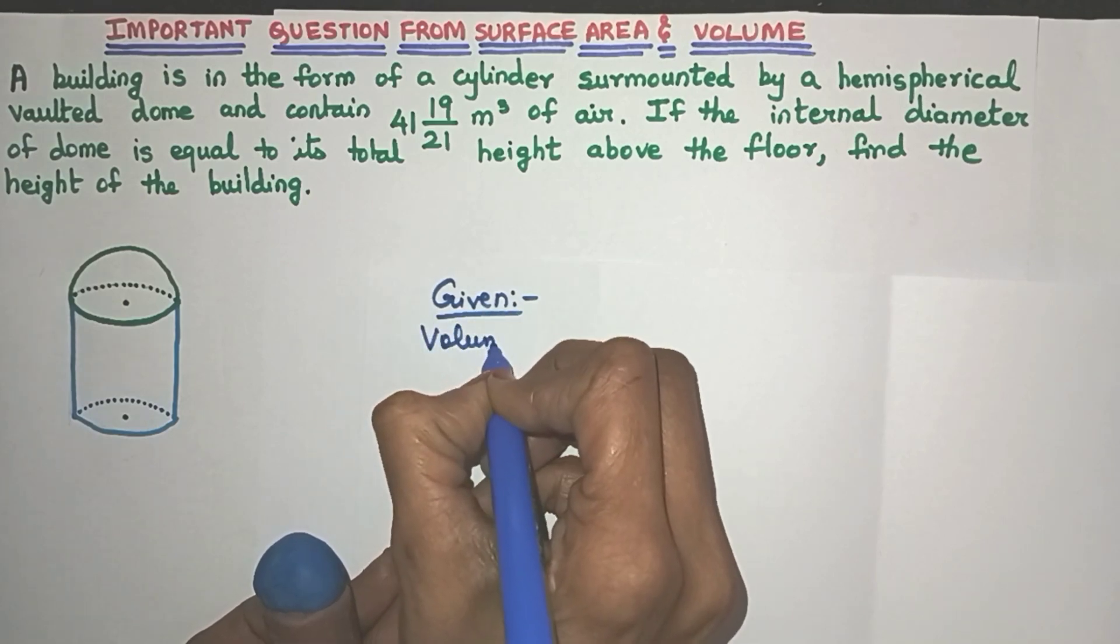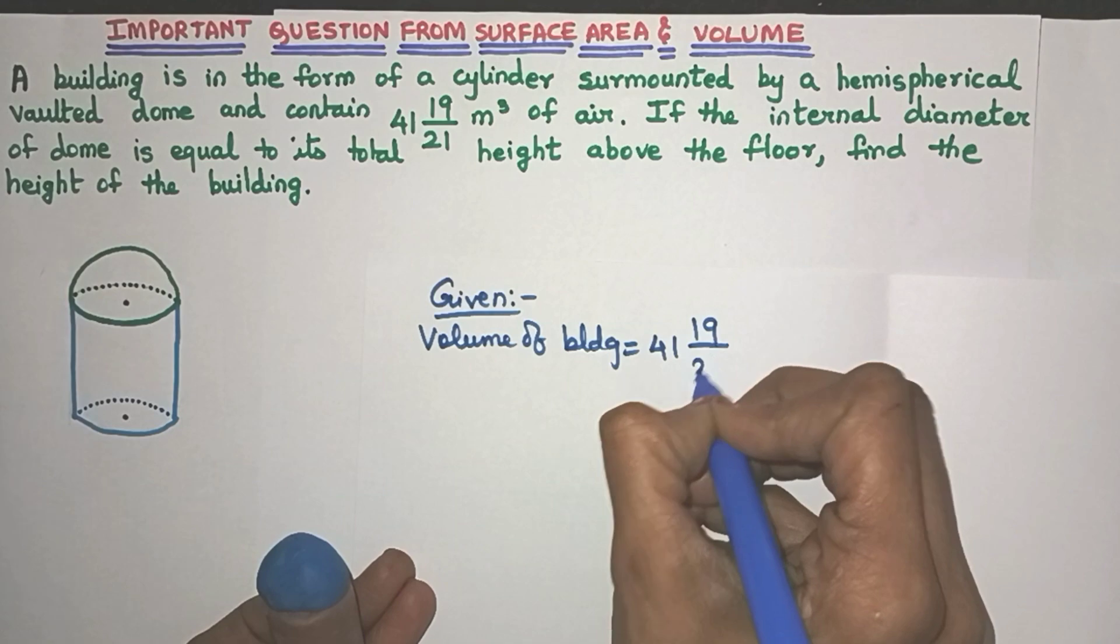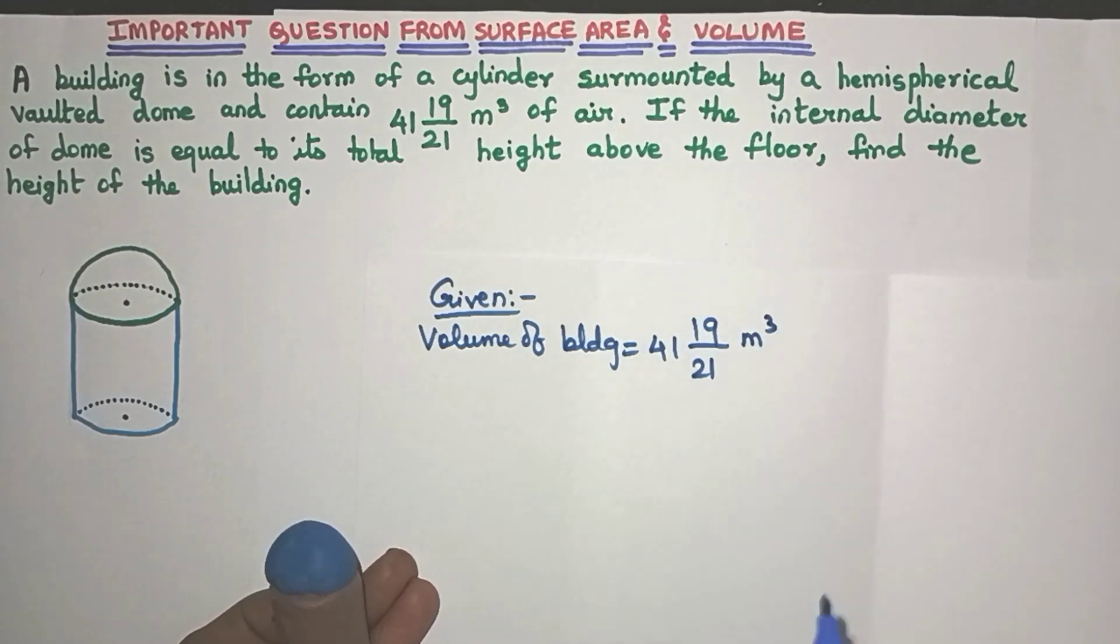So it's given that volume of this building is 4119 by 21 meter cube of air.